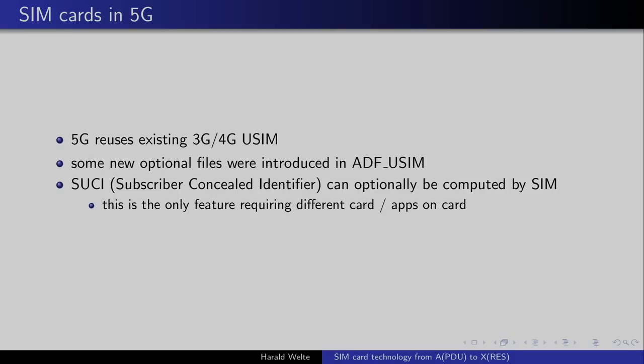Once we go to 5G, it again reuses the existing 3G and 4G USIM cards, with some new optional files. One feature everyone here would probably want — which would require a new or changed SIM card — is that the SUCI, the subscriber concealed identifier, can be computed inside the SIM card. If it's computed inside the card, the SIM has to have support for that computation. In absence of that, everything else still works with an existing 4G SIM card even on 5G networks.